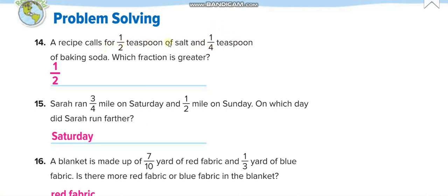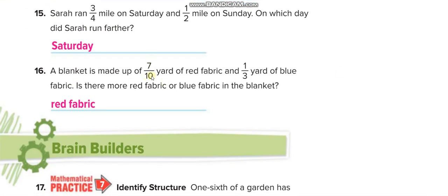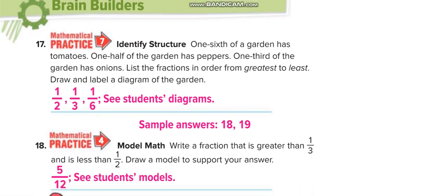Sarah ran 3 over 4 miles on Saturday and half a mile on Sunday. Since 3 over 4 is more than half — half of 4 is 2 and we have 3 — Saturday's distance is greater. For the blanket problem: 7 over 10 yards of red fabric versus 1 over 3 yards of blue fabric. Half of 10 is 5, and 7 is more than 5, so 7 over 10 is more than half. Half of 3 is 1.5 and we only have 1, so 1 over 3 is less than half — meaning the red fabric amount is greater.